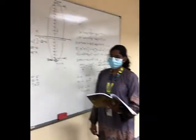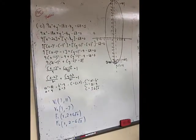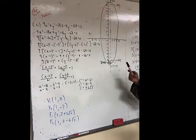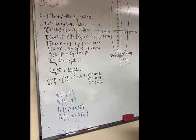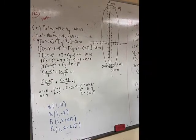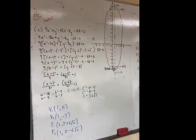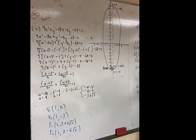The following equation represents an ellipse and we need to find the center and foci. It's 9x² + y² - 18x - 4y - 68 = 0. First we need to rearrange so it becomes 9x² - 18x + y² - 4y - 68.